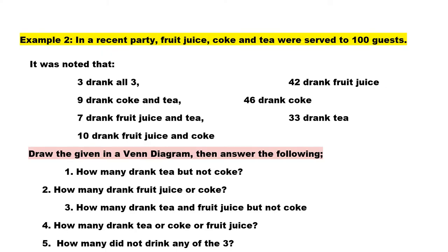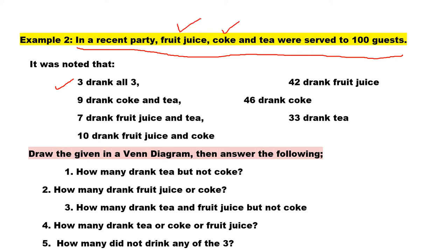I have here example number 2, which will also show us solving problems involving three sets. According to this, at a recent party, fruit juice, Coke, and tea were served to 100 guests. Take note that there are 3 who drank all three. 9 drank Coke and tea, 7 drank fruit juice and tea, 10 drank fruit juice and Coke, 42 drank fruit juice, 46 drank Coke, and 33 drank tea.